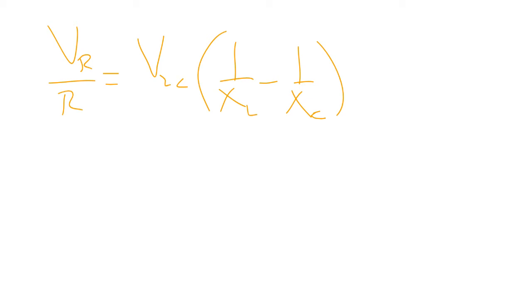Actually, I want to keep this part right here, I want to keep in terms of the current. So that's equal to IR. And so therefore VLC is equal to IR over 1 over X sub L minus 1 over X sub C.